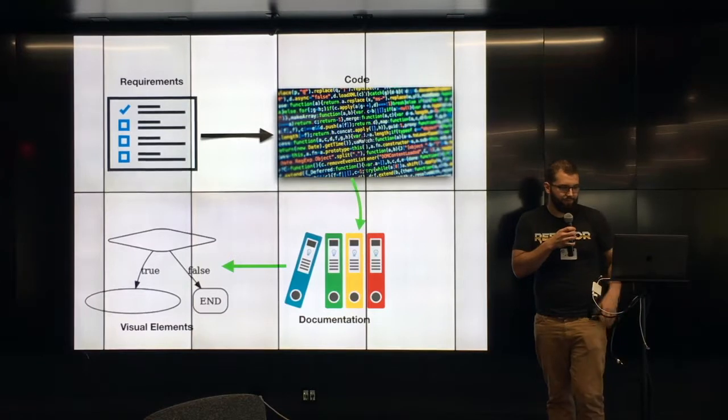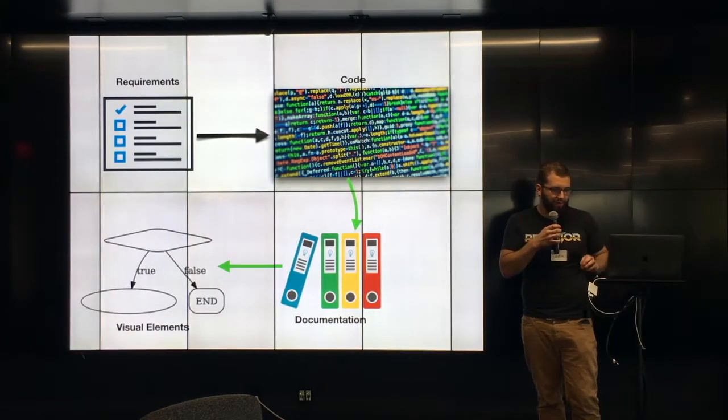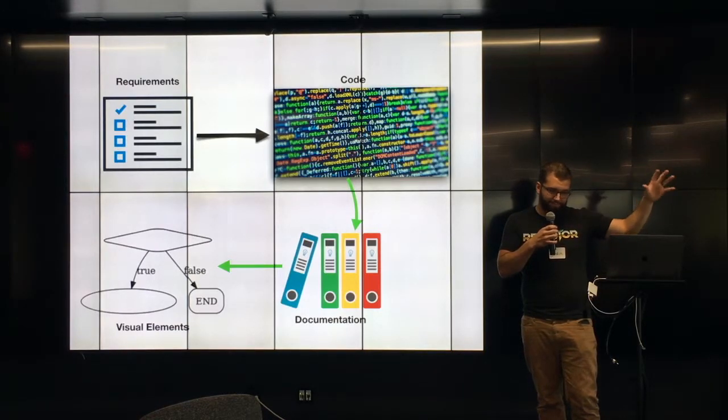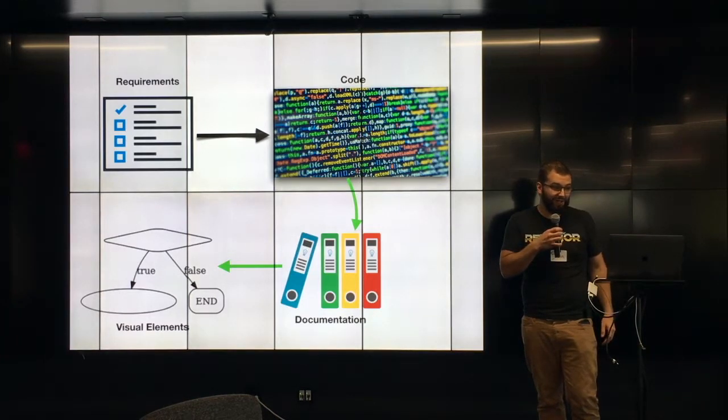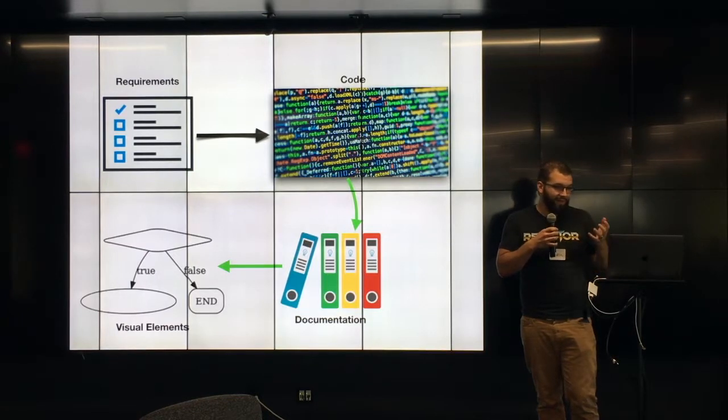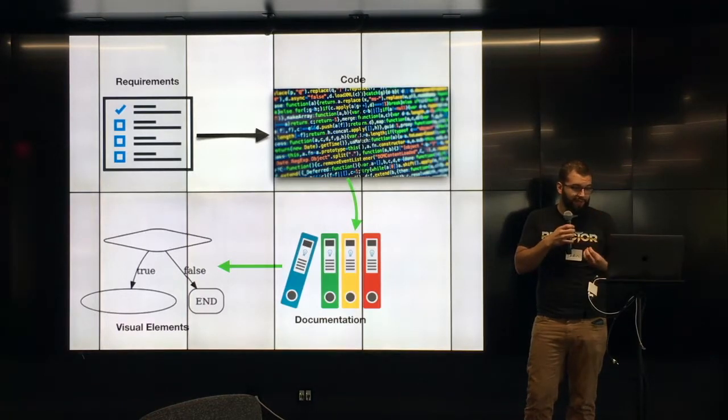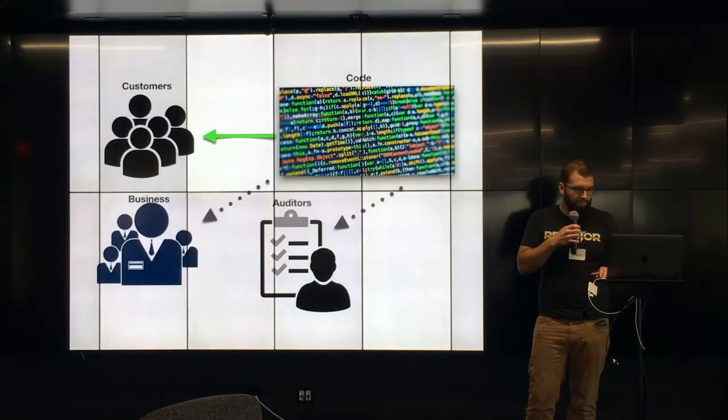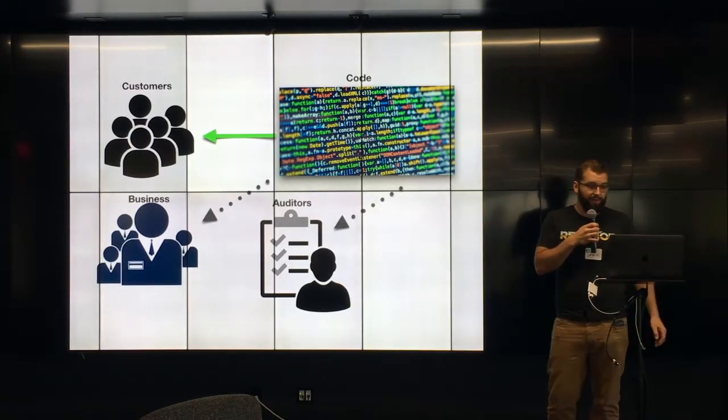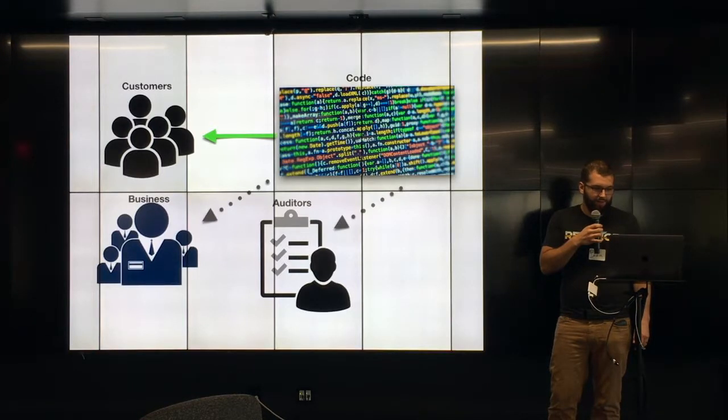So what if we could unpack this? What if we could just kind of reverse that flow in an automated fashion? You always get the requirements, but eventually you got it in the code. But once you know the code's right, what if that could lead into some documentation that has visual elements? In this case, flowcharts.